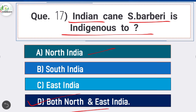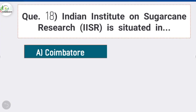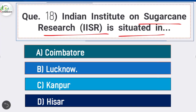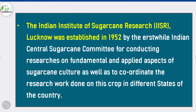Question 18: Indian Institute of Sugarcane Research (IISR) is situated in — option B is correct: Lucknow. IISR in Lucknow was established in 1952 by the erstwhile Indian Central Sugarcane Committee for conducting research on fundamental and applied aspects of sugarcane culture, as well as to coordinate research work done on this crop in different states of the country.